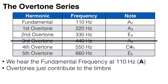This is why plucking a guitar string in different places will sound different. So if we take the note A at 110 Hz, then the harmonics we would hear would be multiples of the fundamental frequency. So we would hear 110 Hz, 220 Hz, 330 Hz, 440 Hz, and so on.